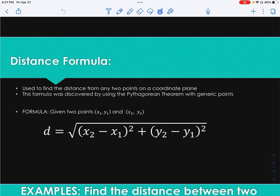Therefore, it will tell you how long a certain line segment is from any two points. This formula was discovered by using the Pythagorean Theorem with generic points. In other words, you can also use the Pythagorean Theorem to do basically the same thing. The formula that we use for the distance is d equals the square root of x sub 2 minus x sub 1 quantity squared plus y sub 2 minus y sub 1 quantity squared.